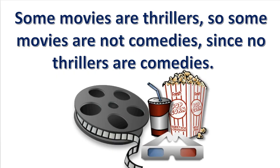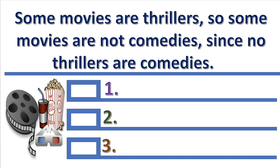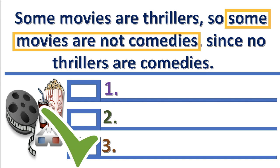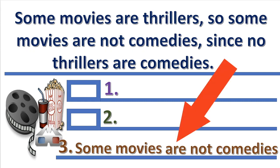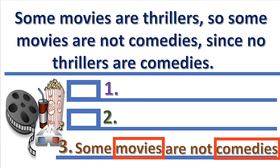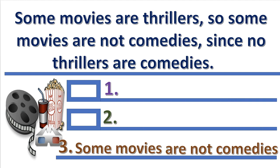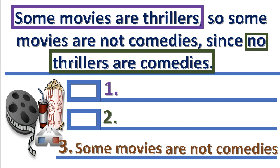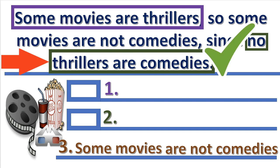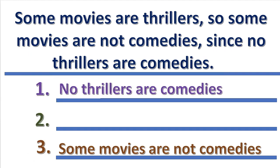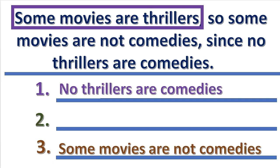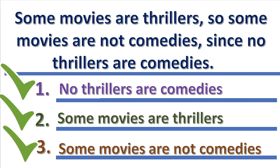What line do you write the conclusion on? The conclusion always goes at the bottom. Look at the conclusion — which term is the major term? The major term is always the predicate of the conclusion. Which premise is the major premise? The major premise is the premise that contains the major term. Lastly, write the minor premise — the one that contains the subject of the conclusion — below the major premise. And presto, the syllogism is now in standard form.